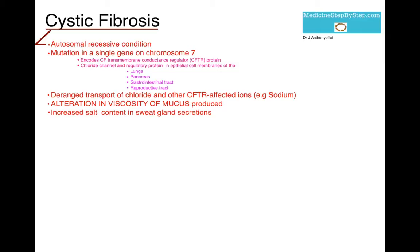Cystic fibrosis is an autosomal recessive condition where there is a mutation in a single gene of chromosome 7. This gene encodes the cystic fibrosis transmembrane conductance regulator protein, which is a chloride channel and regulatory protein in epithelial cell membranes of the lungs, pancreas, gastrointestinal tract, and reproductive tract.